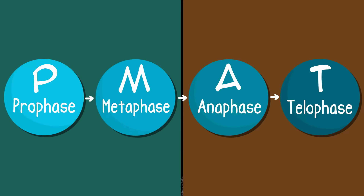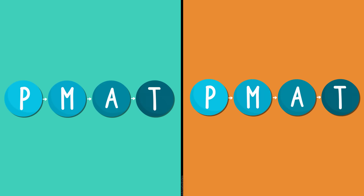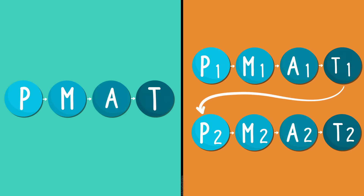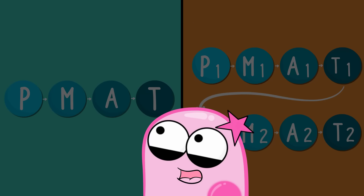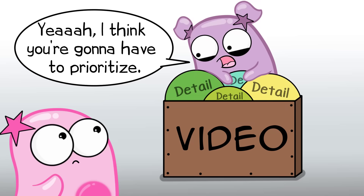When learning the stages, we give the acronym PMAT, which is helpful for understanding stages. Both mitosis and meiosis go through these stages, but meiosis goes through them twice and therefore has a number next to each PMAT stage. We're going to show some basic events for each PMAT stage, but please know that there is way more detail to explore than what we can include in this quick video.